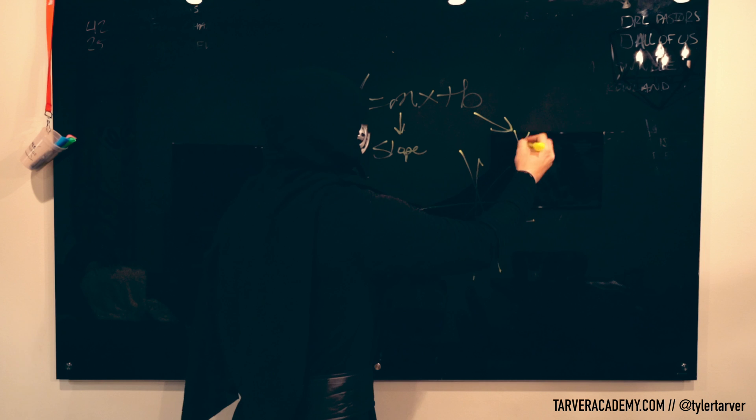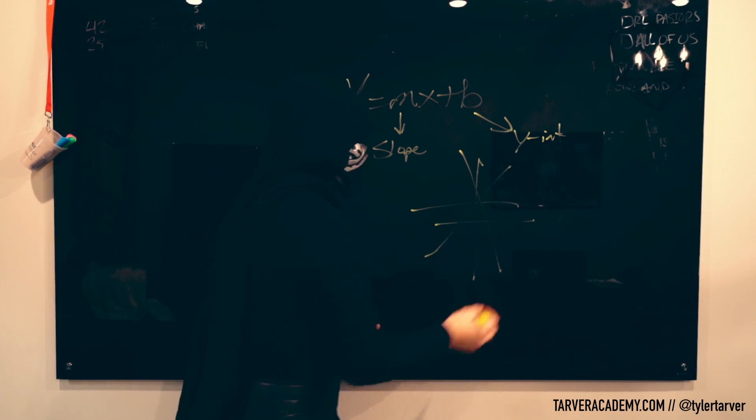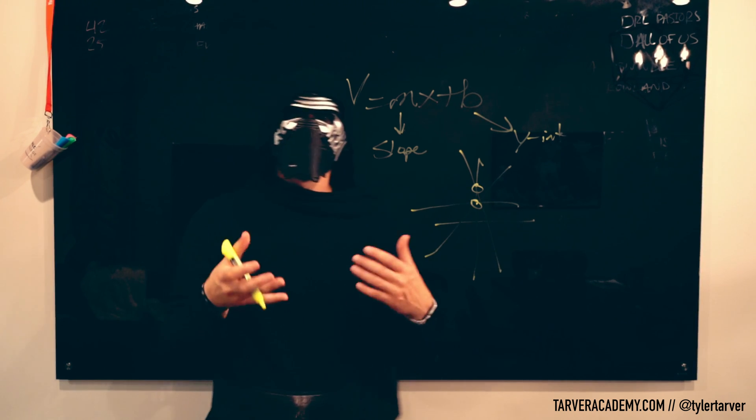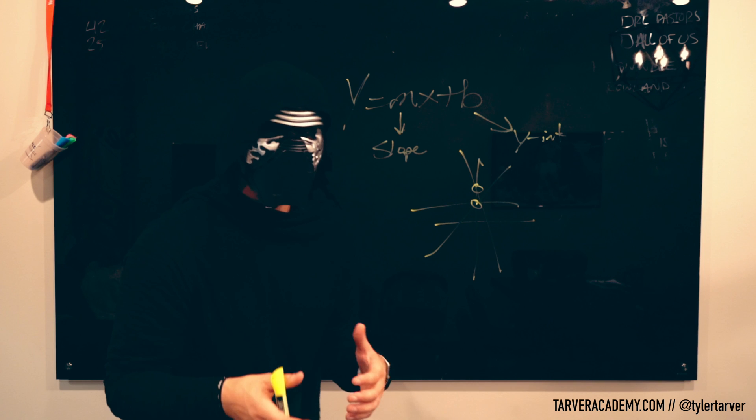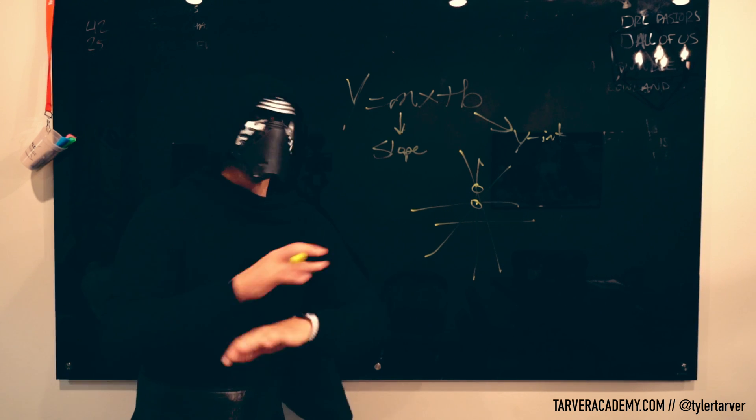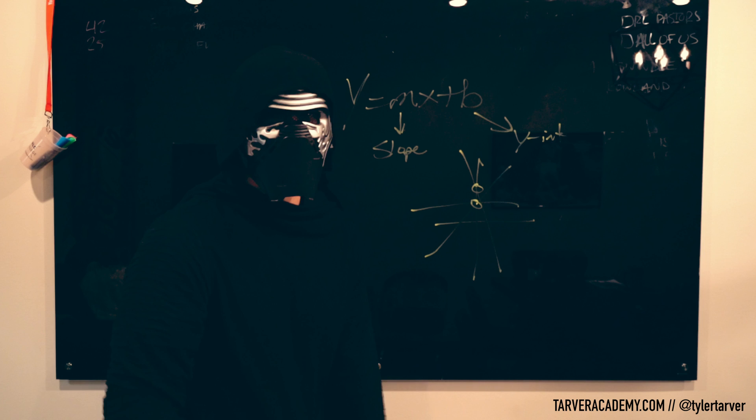Our b represents our y-intercept, which is where it crosses the y-axis. So right here, they both cross right there. This one crosses right here. That is your y-intercept. A lot of people will think that's the y. No sir, that's the dark side of thinking.